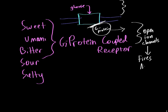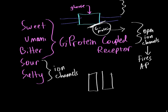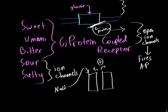On the other hand, the sour and salty taste cells rely on ion channels instead of G-protein coupled receptors. In the case of salty, a molecule of NaCl comes in, binds to an ion channel receptor, and causes it to open up. The receptor opens and allows positive ions outside the cell to flow in. When positive ions flow inside the cell, it causes the cell to depolarize and fire an action potential that goes to the brain.